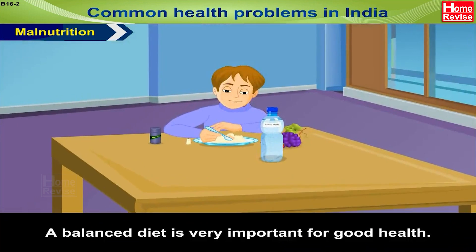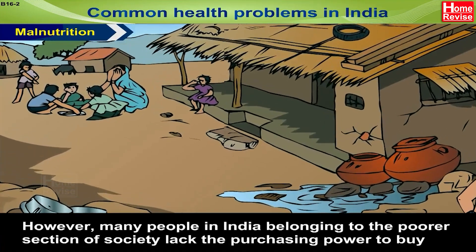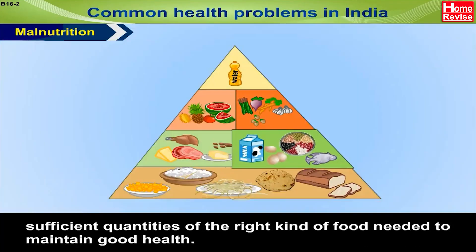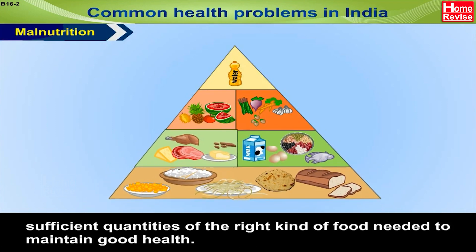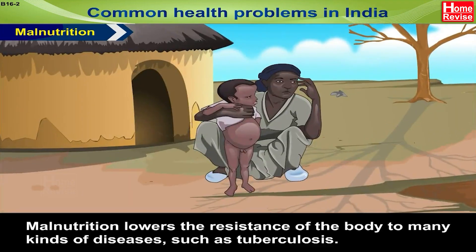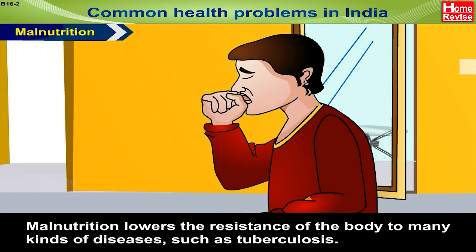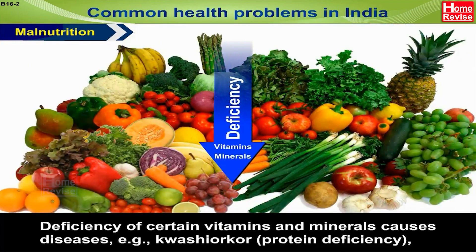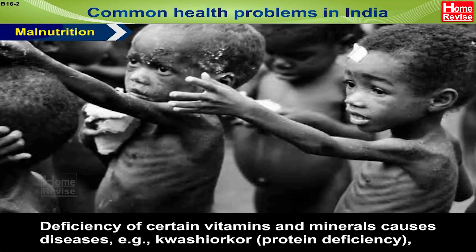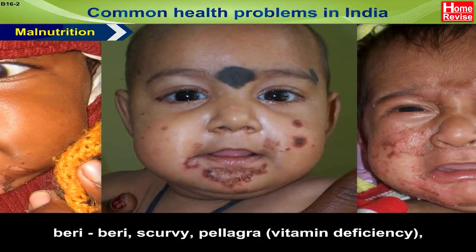Malnutrition: A balanced diet is very important for good health. However, many people in India belonging to poorer sections of society lack the purchasing power to buy sufficient quantities of the right kind of food. Malnutrition lowers the body's resistance to diseases such as tuberculosis. Deficiency of certain vitamins and minerals causes diseases like kwashiorkor (protein deficiency), beriberi, scurvy, and pellagra (vitamin deficiency).